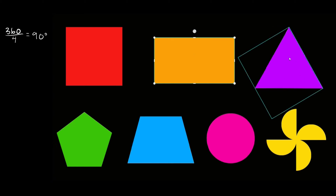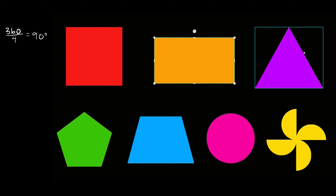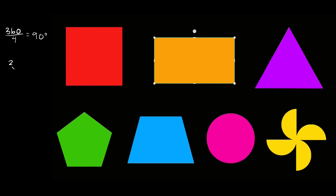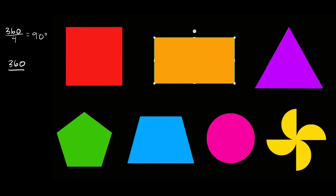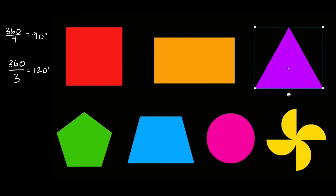Here we have an equilateral triangle — that just means all the sides and angles are the exact same, which also means it's a regular polygon. So if we want to figure out the angle of rotation for this triangle, just start with 360 degrees and divide it by however many angles you have. We have 3, so 360 divided by 3 is equal to 120 degrees. So that means whenever I rotate this thing 120 degrees, it should map back onto itself. You're going to notice it comes off a little bit because I'm not rotating it from the very center like I should be — I'm rotating it from the side — but it's going to be kind of the same thing.